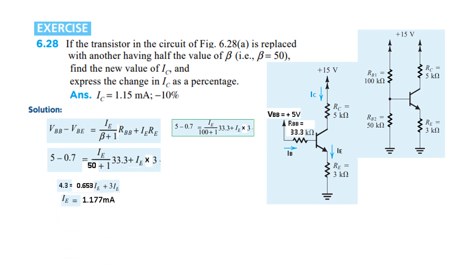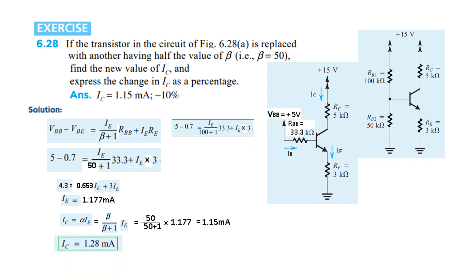With the new beta of 50, solving the updated equation gives the new IE equal to 1.177 milliamperes, which rounds to approximately 1.18 milliamperes. This represents a small percentage change in IC compared to the original value of 1.28 milliamperes.